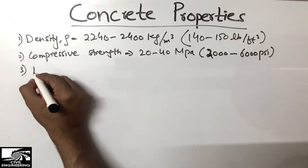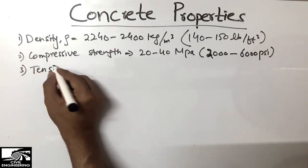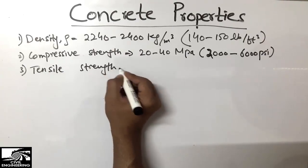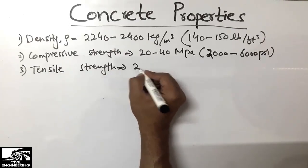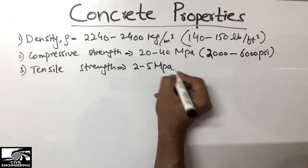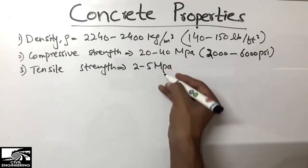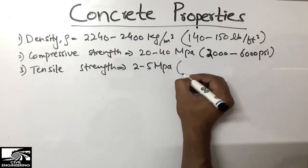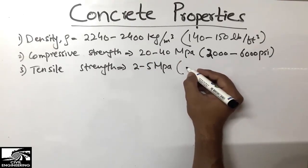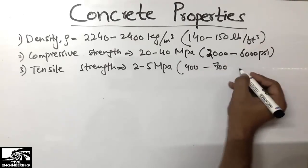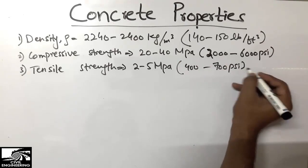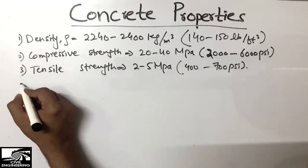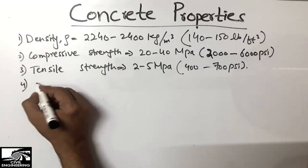The third property is the tensile strength of concrete, which is really less — we generally neglect tensile strength of concrete. It ranges from 2 to 5 megapascal, which is about 10% of the compressive strength, or around 400 to 700 psi.